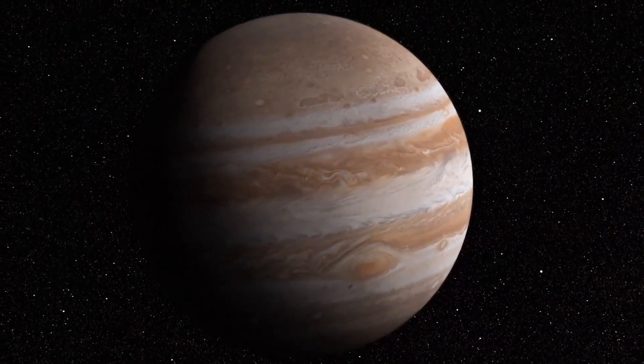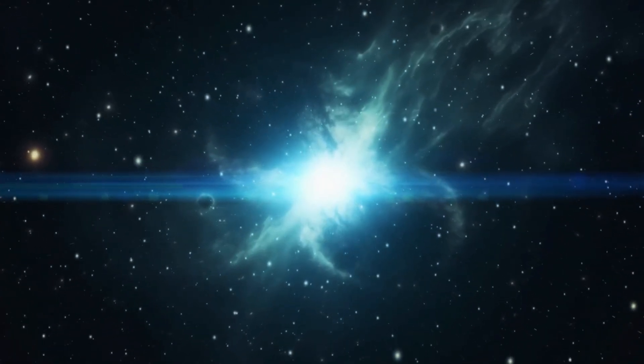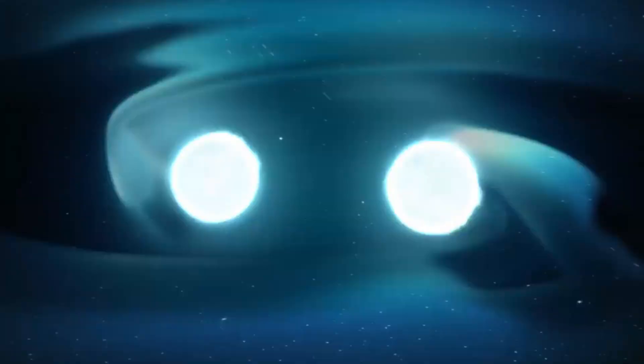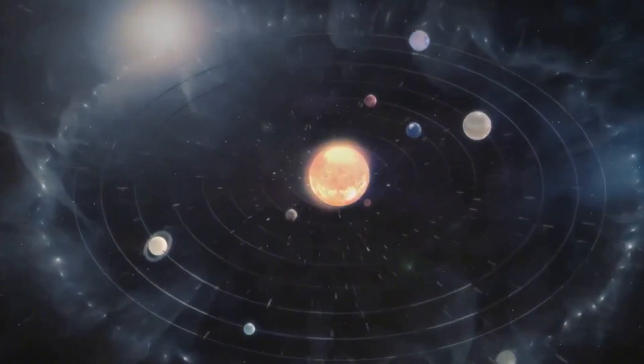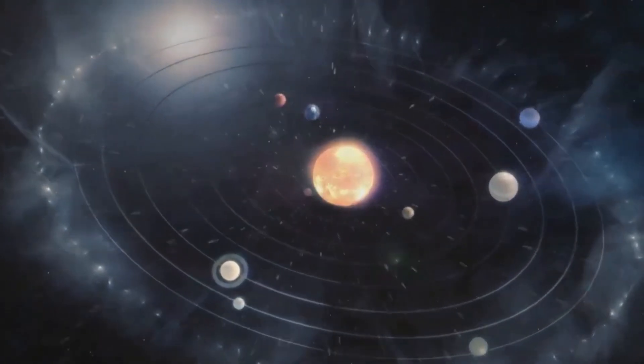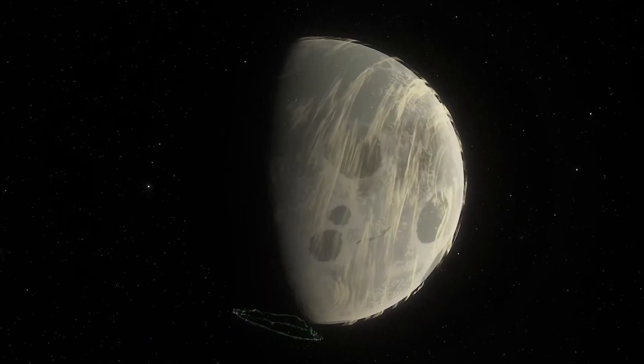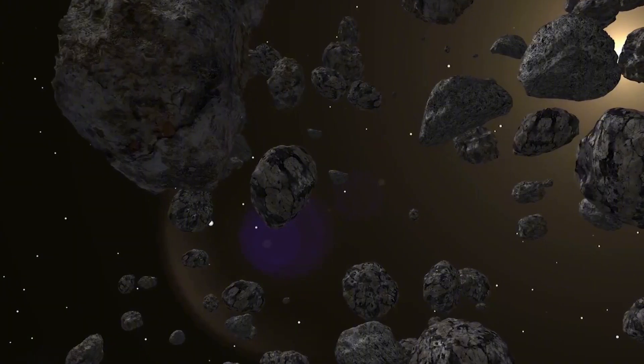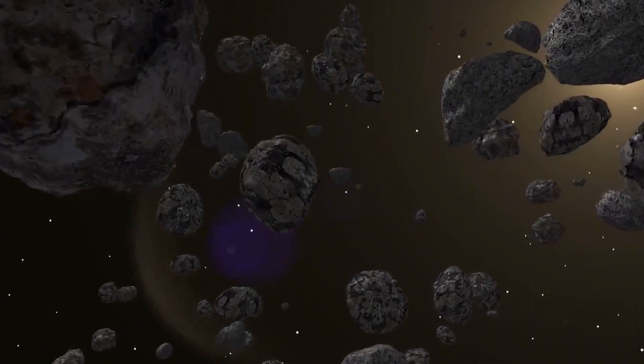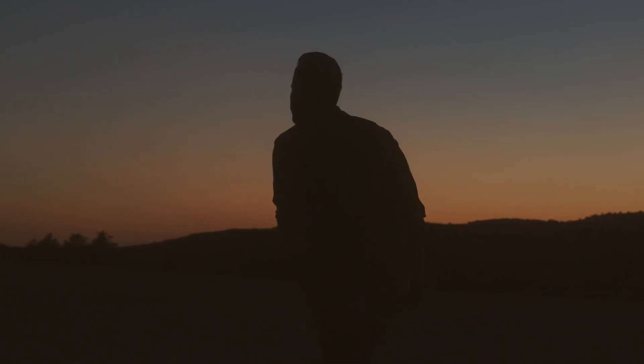You see, Kepler-10c is old. Really old. It formed about 11 billion years ago, less than 3 billion years after the Big Bang. But according to our theories, the early universe shouldn't have had enough heavy elements to form a planet this big and rocky. So, either our theories about planet formation are wrong, or the early universe was capable of producing heavy elements faster than we thought.